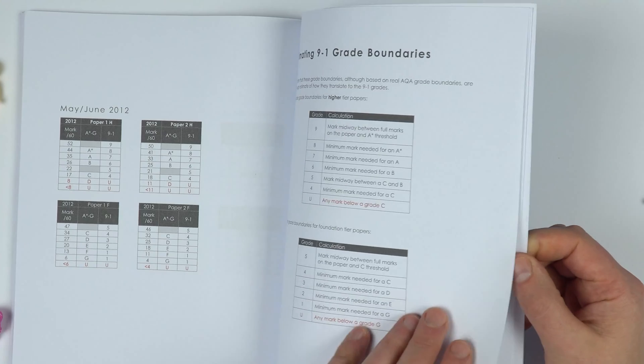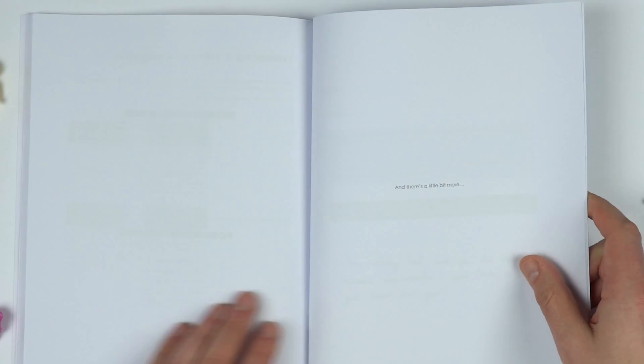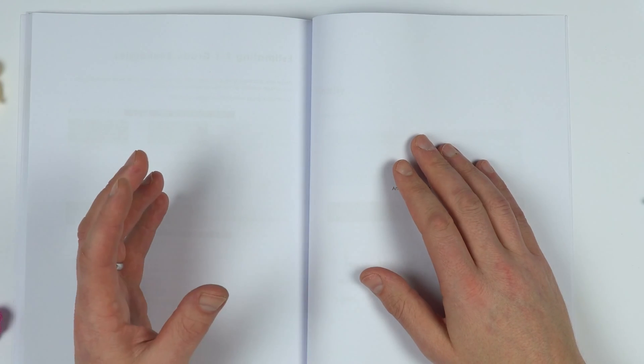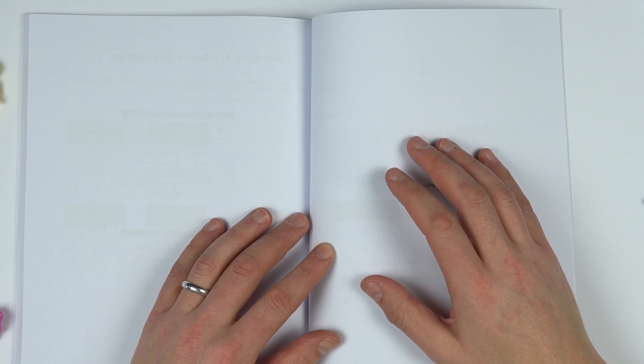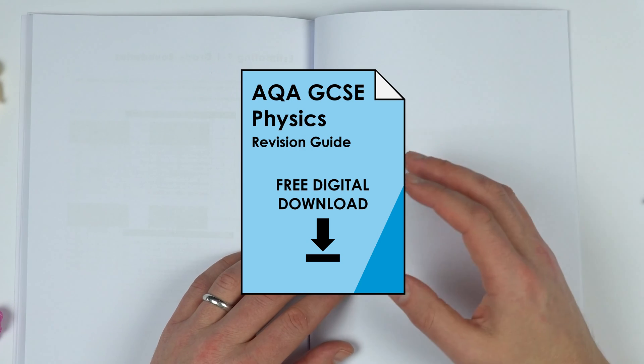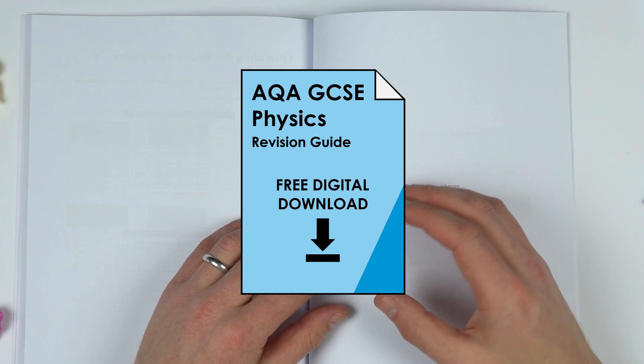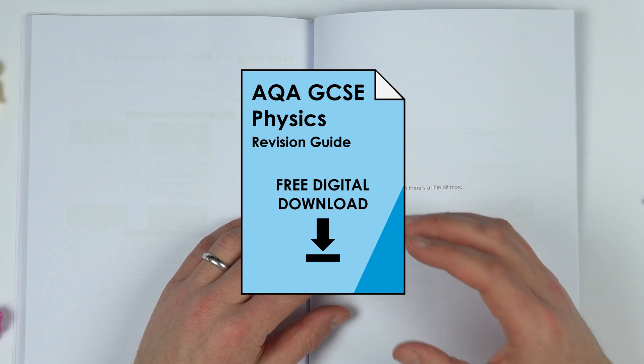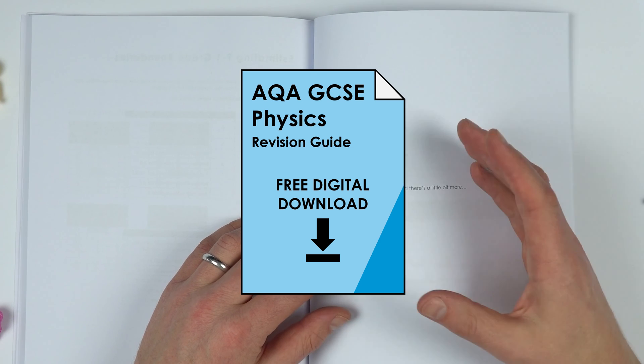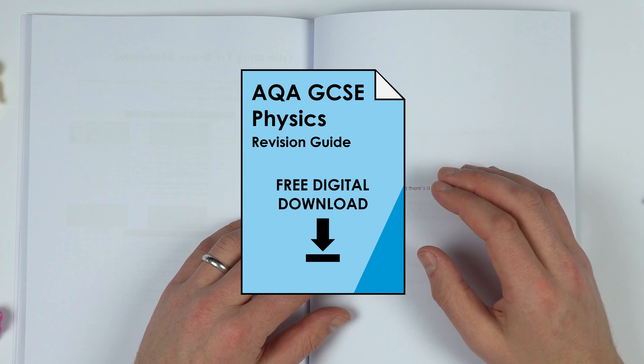So this is my AQA GCSE physics revision guide. It's a completely free digital download. What I suggest you do is maybe save it on your device or print it off, and you can fill it in as you're actually revising for your AQA GCSE trilogy and physics exams.